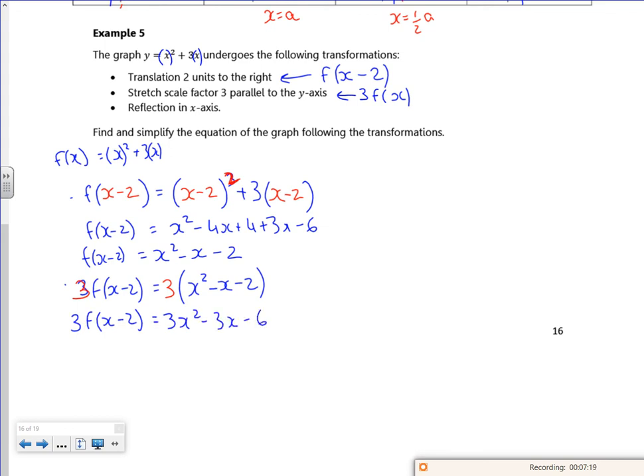Then the last one is a reflection in the x axis. So the next one is minus three lots of f of x minus two, so that's minus three x squared minus three x minus six.